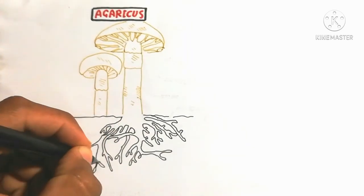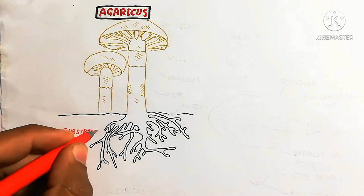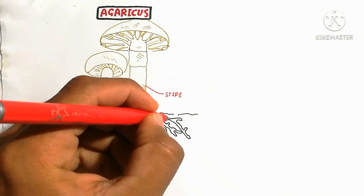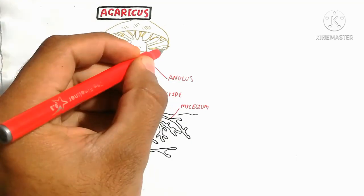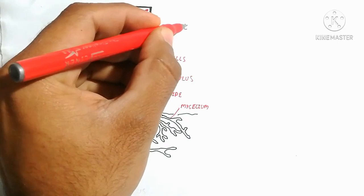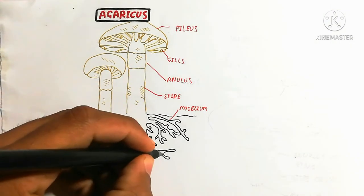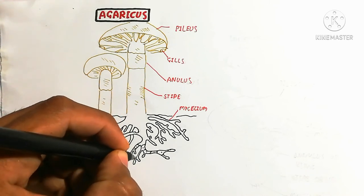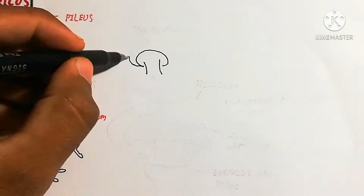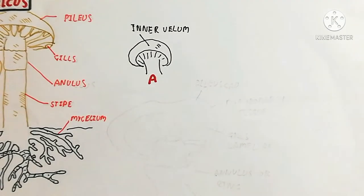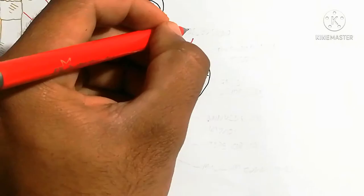This edible mushroom contains different parts. Here is the mycelium, which can be multinucleated or uninucleated. Here is the substratum, and there is the stipe, which attaches the pileus and gills. The upper part is known as the cap, and the stipe is a stem-like structure. Its cell wall is made up of chitin instead of cellulose, which is present in plants. Chitin is a character of insect epidermis, so Agaricus is also related to animals.